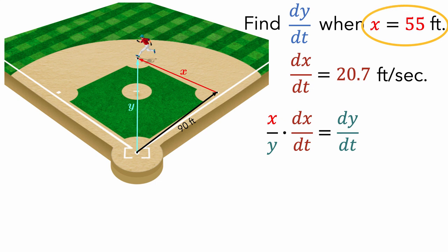So, we have a value for x and a value for dx/dt. So, if we can compute a value for y, then we'll be able to compute a value for dy/dt. To do this, we can go back to the Pythagorean theorem. We want to know the value of y when x is 55 feet. We can use a calculator to solve for y and get that y is approximately equal to 105.5 feet when x is equal to 55 feet.